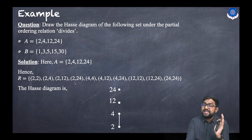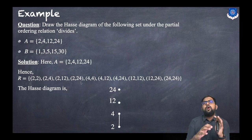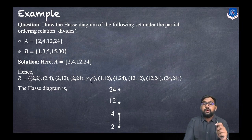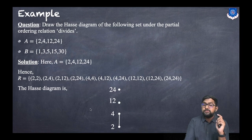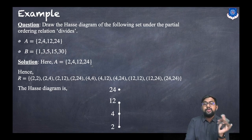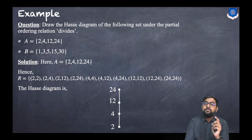For pair (4,12): no number can be placed in between, so this edge is included. For pair (4,24): 12 can be placed in between, so it is a transitive edge and is removed. For pair (12,24): no number can be placed in between, so this edge is included. Self-loop (24,24) is removed. So the Hasse diagram for {2,4,12,24} has edges: (2,4), (4,12), and (12,24).